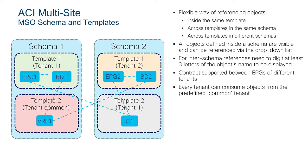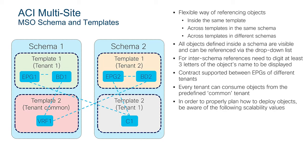Every tenant can consume objects from the predefined common tenant. When deciding how to deploy objects across schemas and templates, you should also consider the scalability values. In MSO 2.x to 4.x, the number of templates in a schema was increased up to 10 (previously five). So you need to consider how many templates you can have in the same schema before deploying another schema.